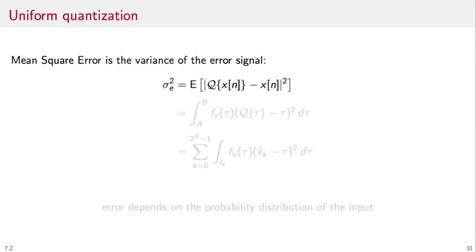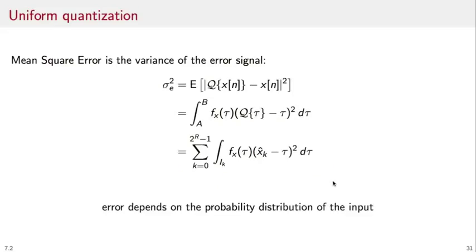The mean square quantization error is the variance of the error signal, namely the expectation of the difference between the quantized samples and the original samples. If we know the probability distribution function for the input, we can write that as the integral from A to B of the pdf of the input times the error function, which is the quantized value of the integration variable minus the integration variable squared. This is a standard application of the expectation theorem. And we can finally split the integral over the independent quantization intervals.